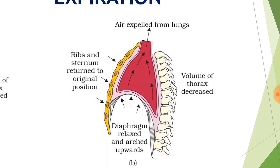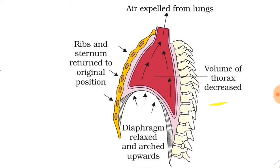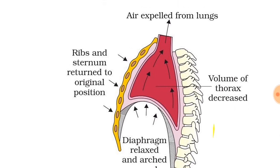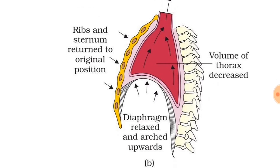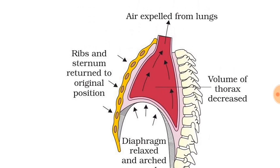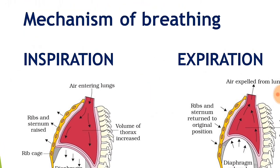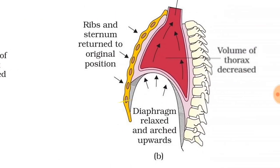Expiration is the reverse process. The ribs and sternum return to their original position and the diaphragm relaxes and arches upward. This reduces the volume of the pulmonary cavity and increases the pressure, causing air to be expelled from the lungs into the external atmosphere. The four steps of expiration: ribs and sternum relax to original position, diaphragm relaxes and arches upward, volume of thorax decreases, air is expelled from the lungs.